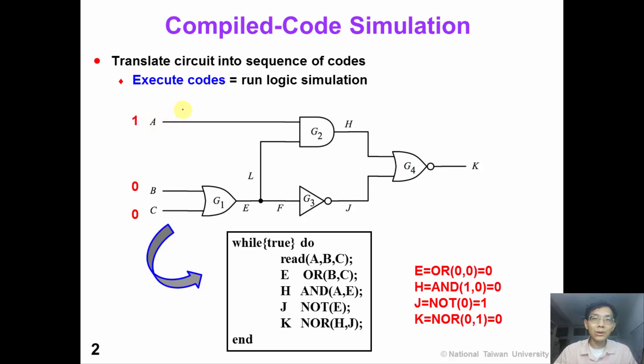The idea of compiled code simulation is pretty simple. We just translate the circuit into a sequence of codes. For example, the following circuit can be translated into this code. When we execute this sequence of code, we can run the logic simulation.